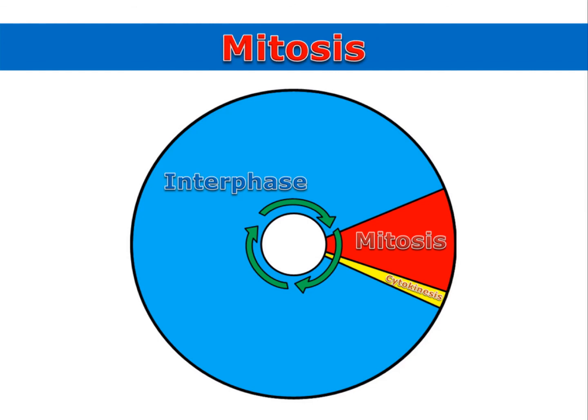During mitosis, the cell passes through prophase, metaphase, anaphase, and telophase. As the cell completes telophase, it moves on into the final stage of the cell cycle, called cytokinesis.